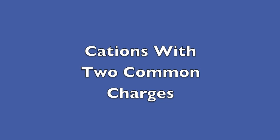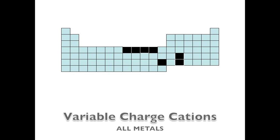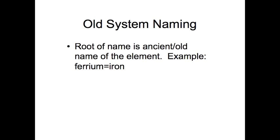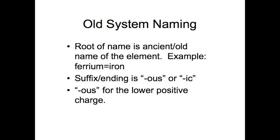Let's look at cations with two common charges. These cations come from the middle of the periodic table. You could call them variable charge cations. They're all metals. Let's look at two ways of naming. The old system, you would take the root of the ancient name. In this case, ferium for iron. The suffix or ending would be us or ick. Us for the lower positive charge. Ick for the higher charge involved.